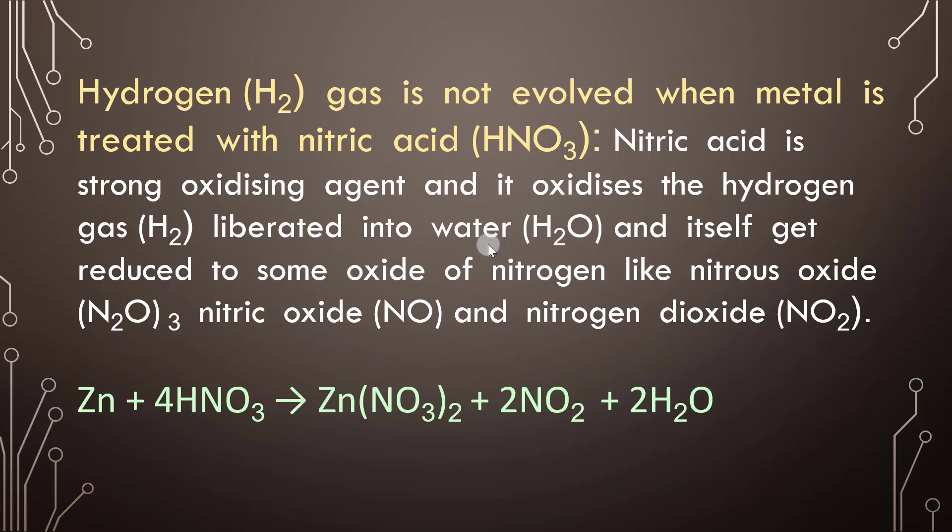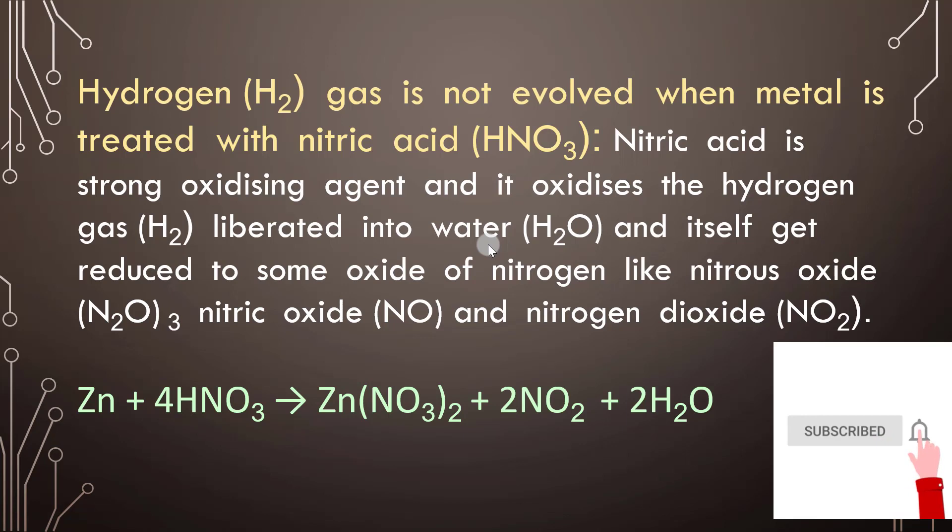The hydrogen is converted into water, and the nitric acid itself gets reduced to some oxide of nitrogen. The possible nitrogen oxide products are nitrous oxide, nitric oxide, and nitrogen dioxide. These are the three nitrogen-containing products which can be found during this reaction.